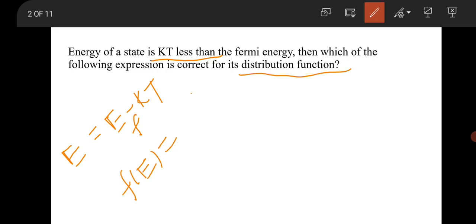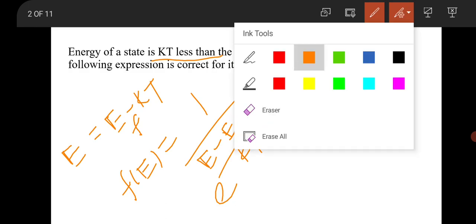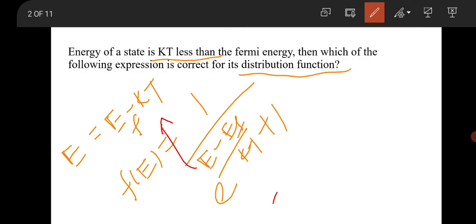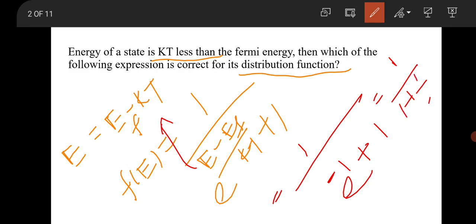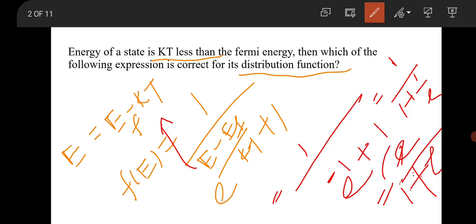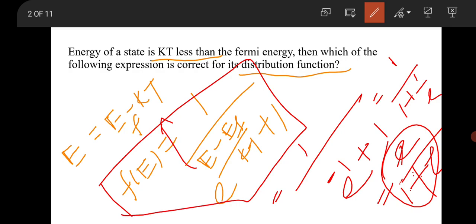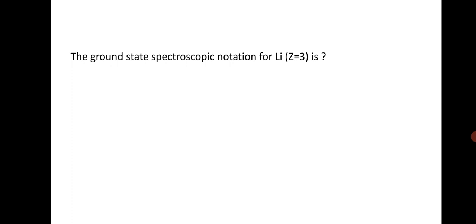You know the Fermi distribution function f(E) = 1 / [e^((E − Ef)/kT) + 1]. If you replace E by Ef − kT, the exponent becomes −1, so it becomes 1 / [1 + 1/e] = e / (1 + e). So the distribution function is e / (1 + e). Just substitute the given energy state into the Fermi distribution function to find this answer.